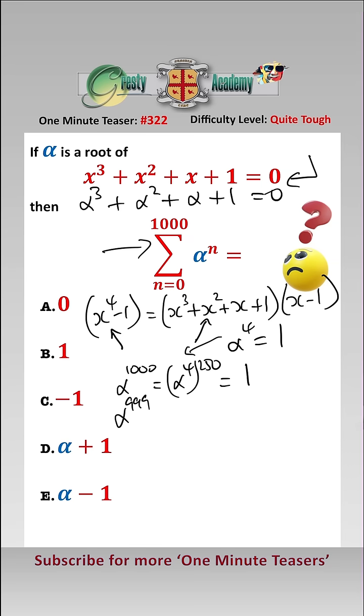Alpha to the 999 is equal to alpha to the four to the power of 249 times alpha cubed, which is alpha cubed. Alpha to the 998 is equal to alpha to the four to the 249 times alpha squared, which is alpha squared.